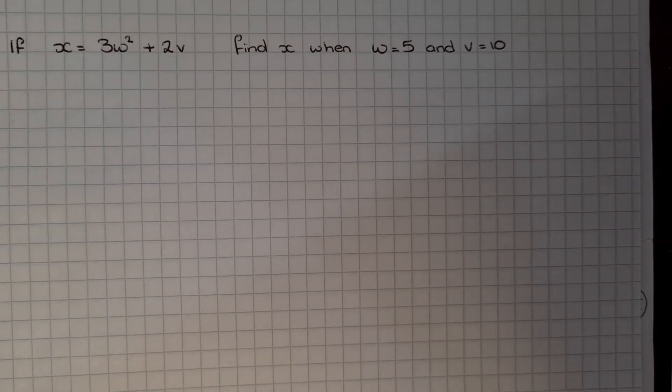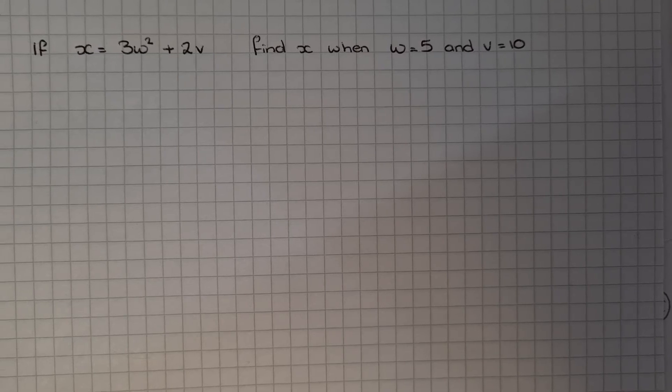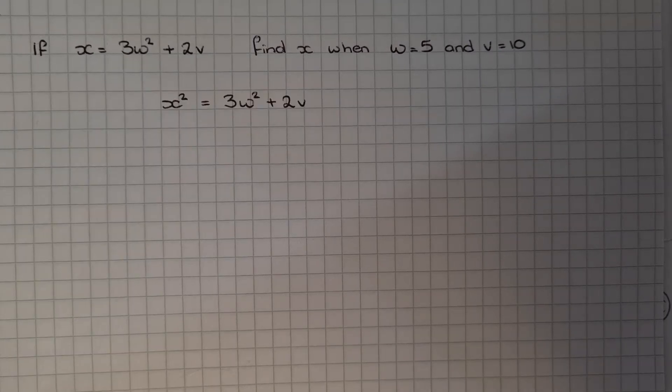One more example. If X equals 3W squared plus 2V, find X when W equals 5 and V equals 10. Write down your formula first.